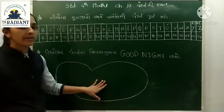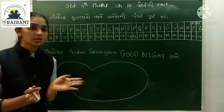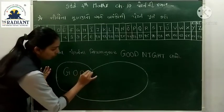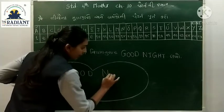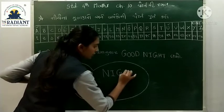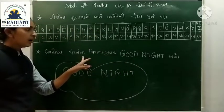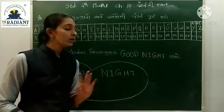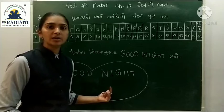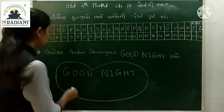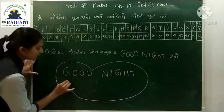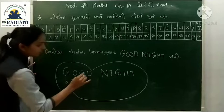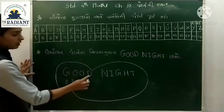ચાલો Good Night લખો. આ ઉપર જે પેટર્ન આપેલી છે તેના નિયમ ધ્યાનમાં રાખીને આ Good Night - G O O D N I G H T - લખાનું છે. હવે એના નિયમ પ્રમાણે આ નીચે અંકો લખવાના છે.